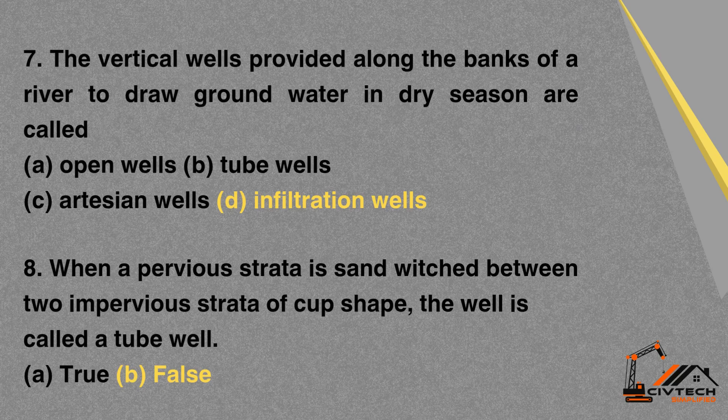MCQ 7: The vertical wells provided along the banks of a river to draw groundwater in the dry season are called — A. Open wells. B. Tube wells. C. Artesian wells. D. Infiltration wells. Correct option: D. Infiltration wells.